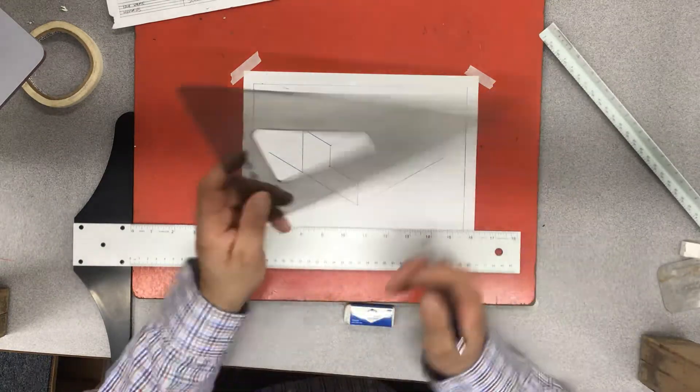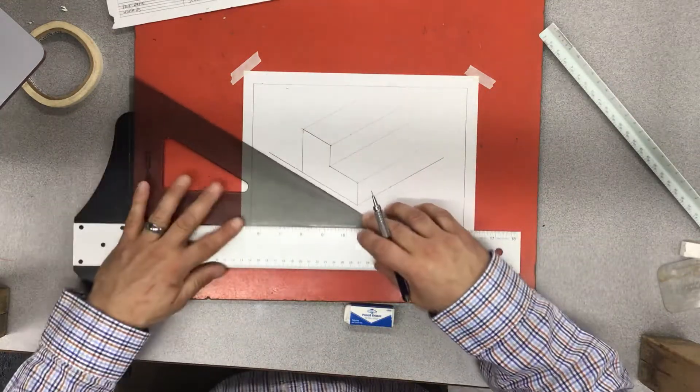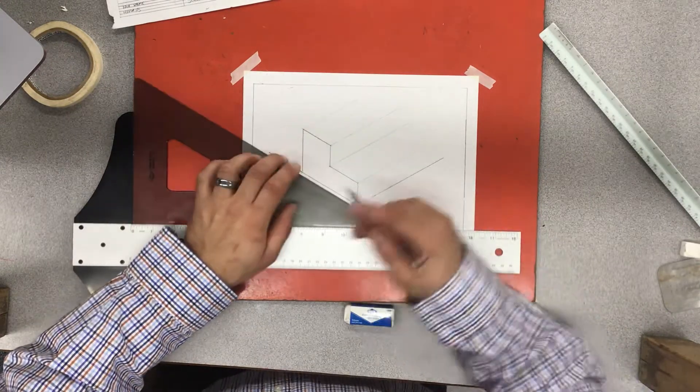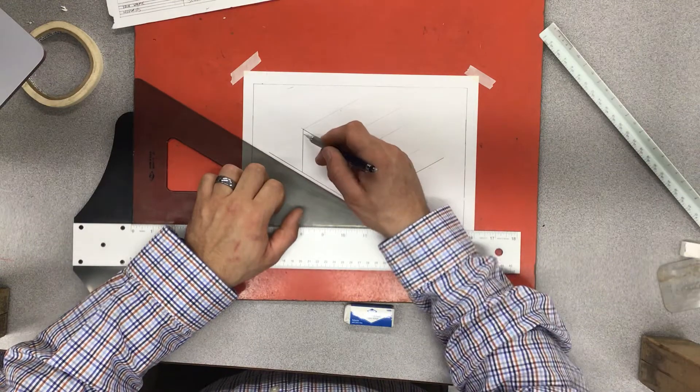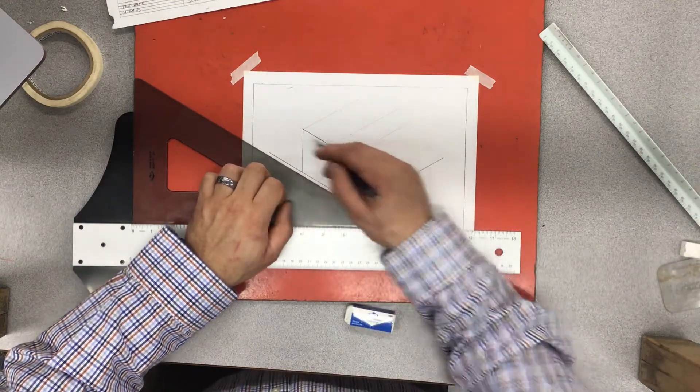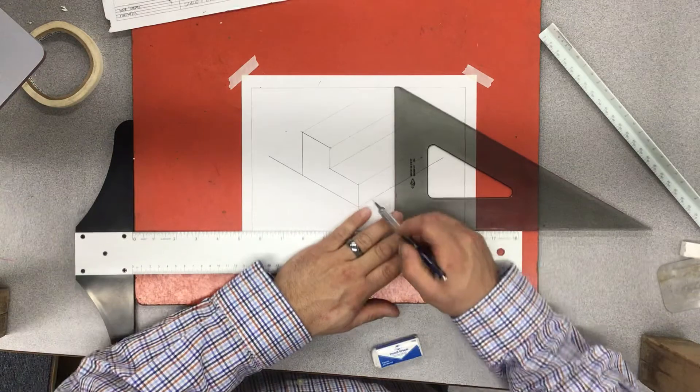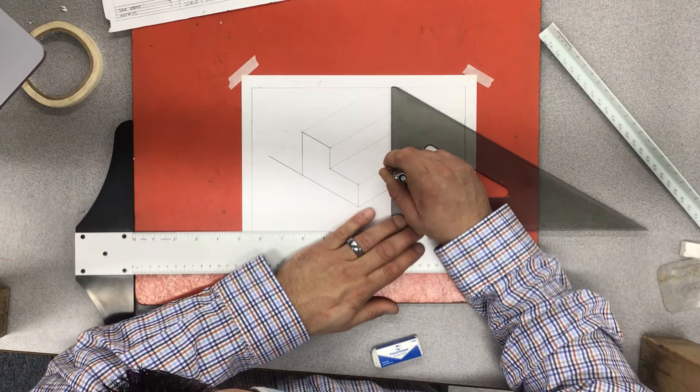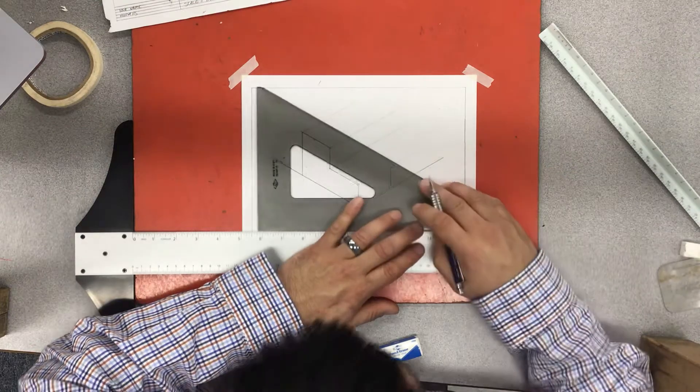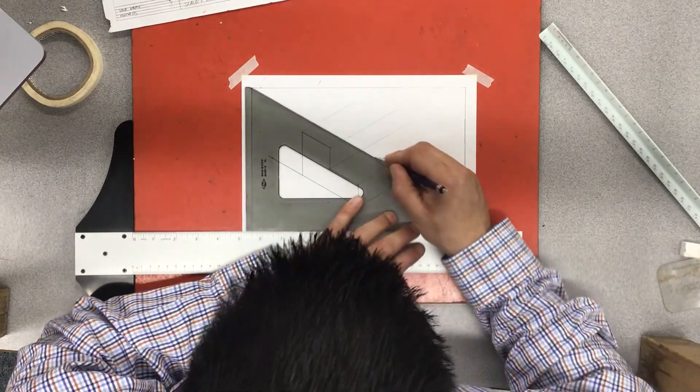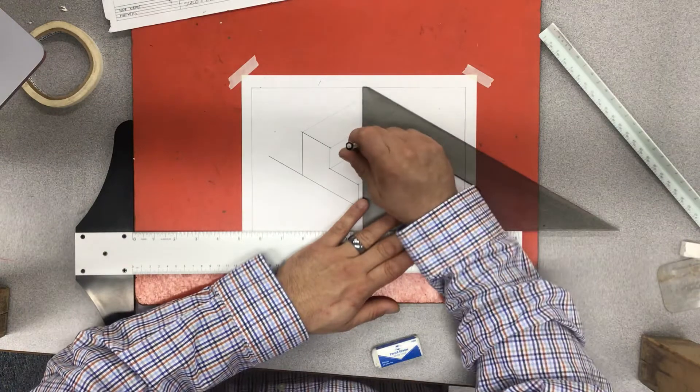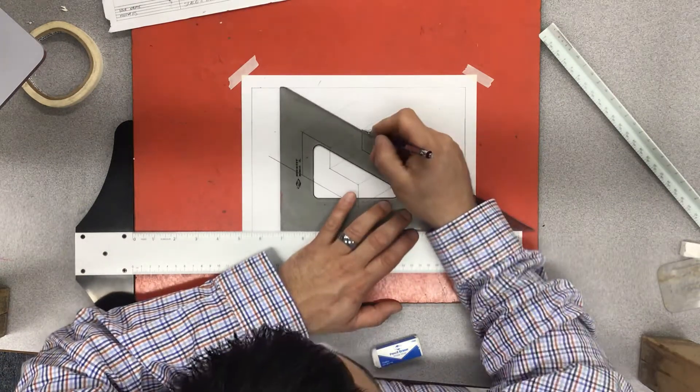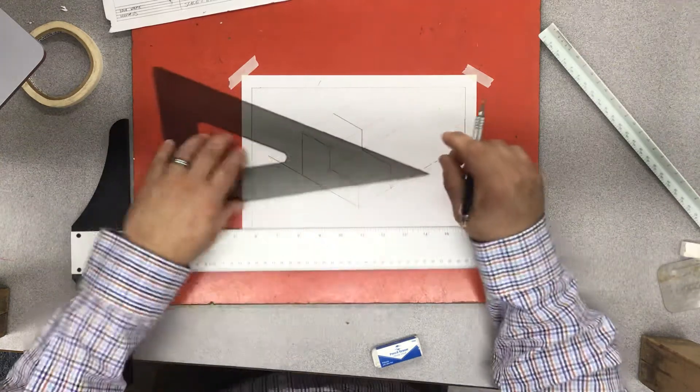But then what I'm going to do is I'm going to turn my triangle around so it's parallel to my front view. Notice how it's parallel to the base and it's parallel to the verticals. What we're trying to do is we're trying to remake this shape. Up, over, up, over. So I come to where I measured my first mark at one and three quarters, and I come up. Up, where those two lines intersect, I slide over, draw my line. Where those two lines intersect, I slide up and come back and go over.